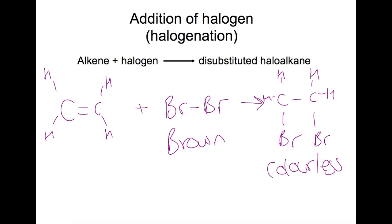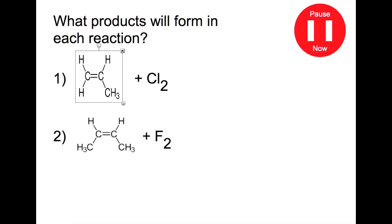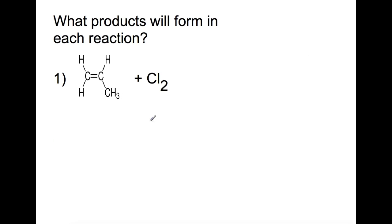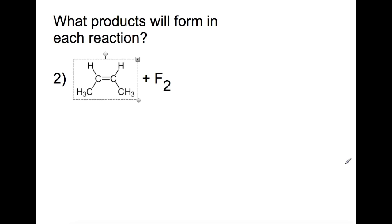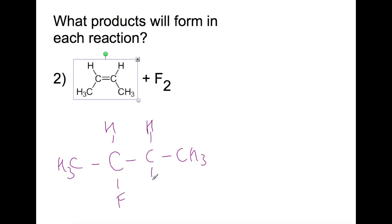The same reaction can occur for any of the halogens, which are all diatomic molecules. Pause the video now and draw the reactions shown. In this first reaction we have propene and we're adding chlorine, so you'll end up with a Cl atom on each of these carbons — everything else around the carbons stays the same. Here we have butene and we're adding fluorine, so again everything else around the carbons stays the same but we add a fluorine atom to each of them.